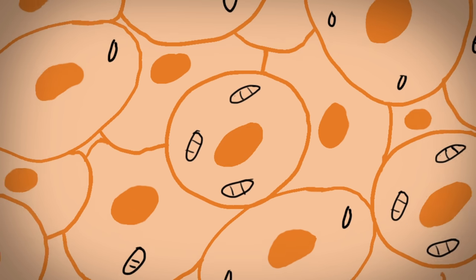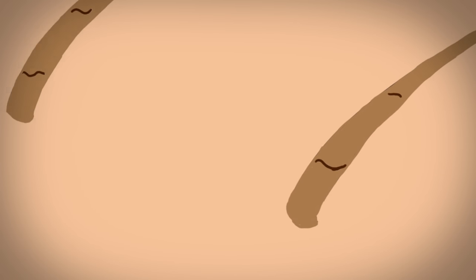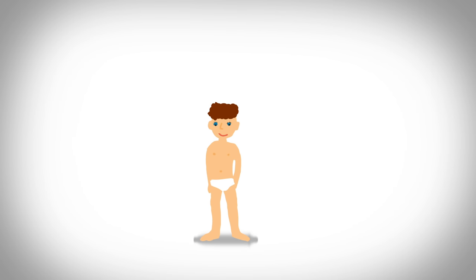Proteins make up cells, cells make up tissue, and tissue makes up organs, like your eyes and your skin.